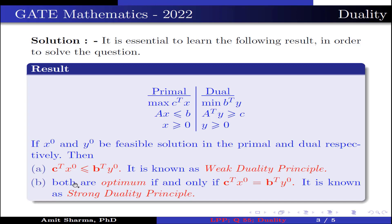Furthermore, x0 and y0 are both optimal if and only if C^T x0 = b^T y0, meaning if x0 and y0 are the optimal solutions of the primal and dual, then the objective functions of the primal and dual are equal. This is known as the strong duality principle.